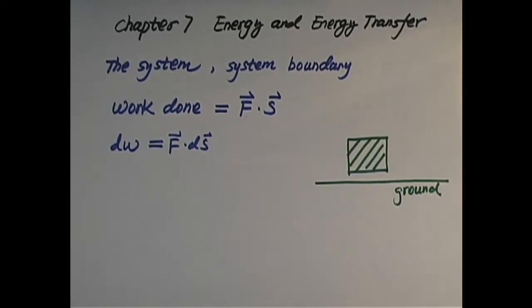A system is a single object or particle, or can be a collection of objects or particles, or a region of space. So first of all, we define what is our system. Then we can recognize where is the system boundary.